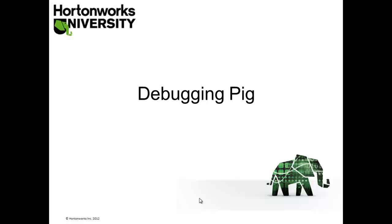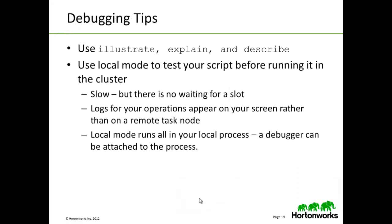The PIG Latin language contains a number of keywords specifically for debugging a PIG Latin script, and there is also a methodology associated with debugging. We suggest using illustrate, explain, and describe to make sure the plan you are building will be interpreted correctly. When testing your script, use local mode before running it in a cluster — local mode is slow but there is no waiting for a slot. Logs appear on the screen rather than on a remote task node, and a debugger can be attached to the local process.